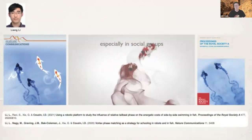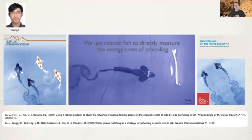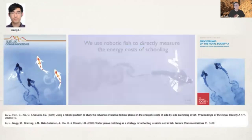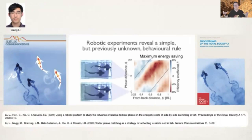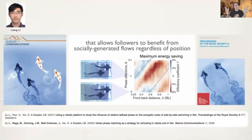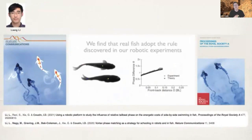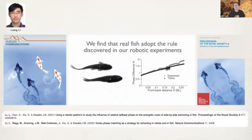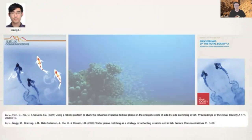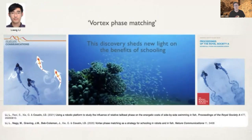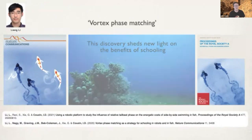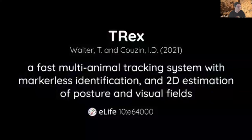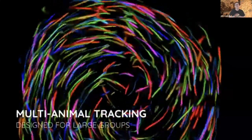We also use biomimetic robotics because, despite having supercomputers, we still can't solve the hydrodynamic interaction equations. So we use biomimetic robotics to develop theory for how fish could in principle save energy, and then test this theory directly with real animals. This is termed vortex phase matching, a new theory we developed.